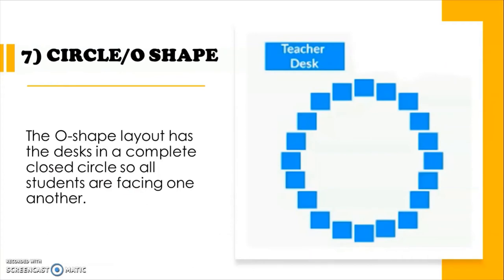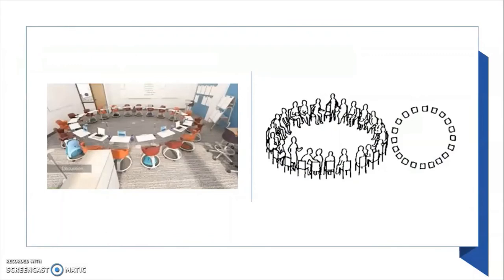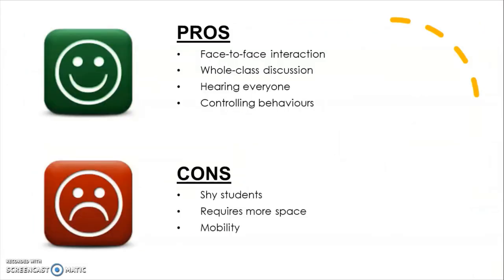The seventh one is circle or O-shape. The O-shape layout has desks in a complete closed circle so all students are facing one another. Pros: it's ideal for face-to-face interaction, suitable for whole class discussion, easy to hear everyone, easier to control student behavior, and the teacher can stand in the middle and very easily move from student to student. Cons: it may be hard for shy students, it requires more space, it's difficult to implement in small classrooms, it restricts mobility, and there should be flexible and mobile furniture such as desks on rolling wheels for this arrangement.